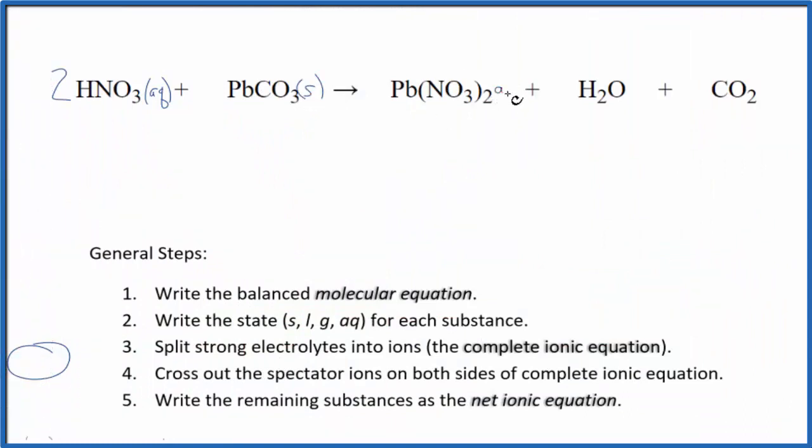Nitrates are very soluble, that's going to be aqueous, dissolved, split apart into its ions. Water is a liquid, carbon dioxide forms a gas. So we have the states for our net ionic equation.